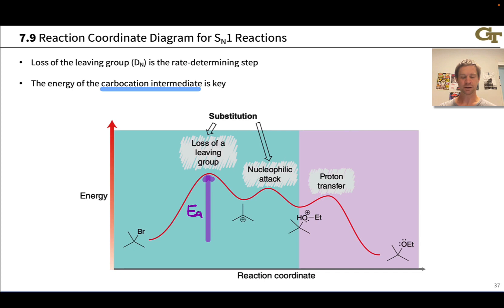So, the energy and stability of that carbocation intermediate is key. As the carbocation is stabilized, the transition state energy also drops, and the reaction gets faster. This is why generally tertiary and resonance stabilized carbocations are involved in SN1 reactions, since these carbocations are relatively stable.